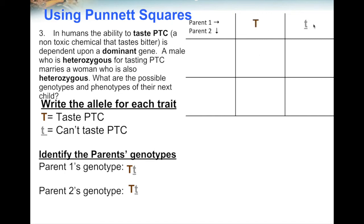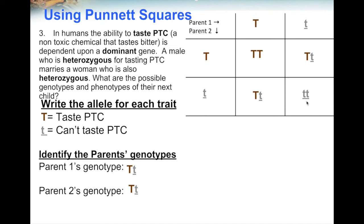Write down the genotypes of each parent on the outside of the Punnett square — both parents are heterozygous, so put a letter in each space for both. Fill in the inside: the first box has capital T from each parent — homozygous dominant. The second box has capital T from one parent and lowercase t from the other — heterozygous. The third box also has capital T and lowercase t — heterozygous. The last box has lowercase t from both parents — homozygous recessive.